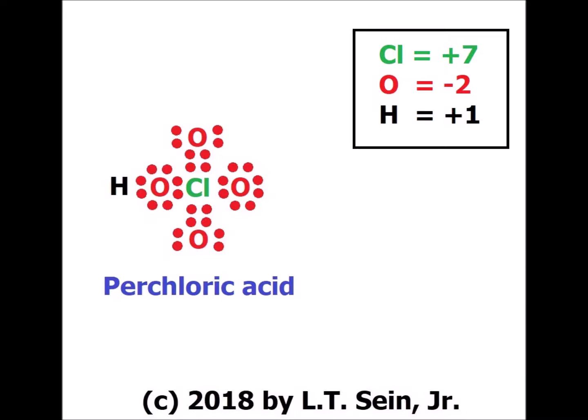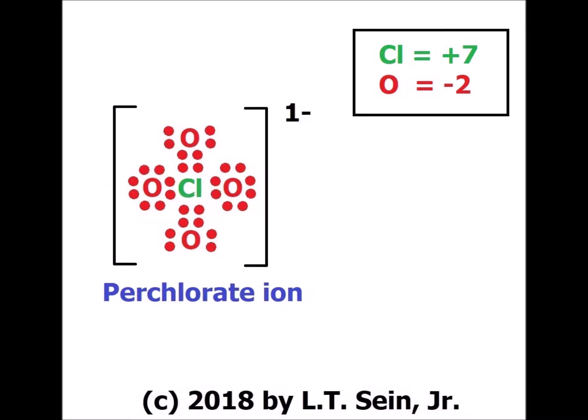Perchlorate ion is the conjugate base of perchloric acid. As we noted before, chlorine will have exactly the same oxidation number in the conjugate base as it did in the acid — in this case the maximum value of plus seven. It started with seven valence electrons and lost every single one of them, because we count the electrons to the more electronegative of the two elements, which in this case is oxygen.